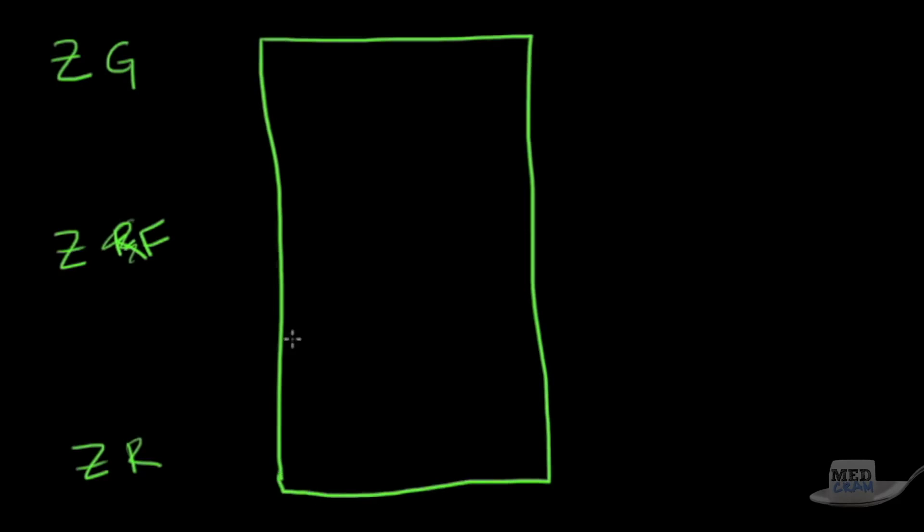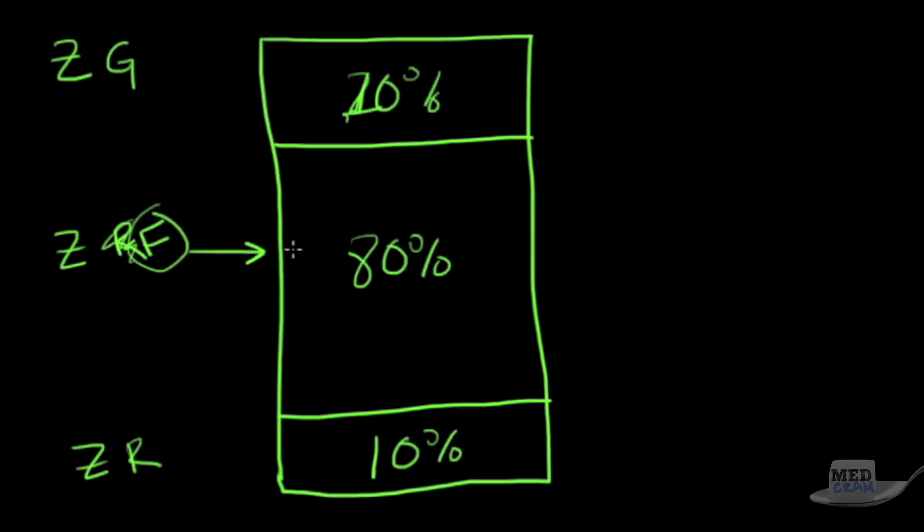If you remember our three layers - zona glomerulosa, zona reticularis, zona fasciculata, and zona reticularis. If you're actually to look at this linearly, if you take a slice of the adrenal cortex, you would see that the bulk of the adrenal cortex is actually made up of the zona fasciculata, about 10% up here and the other 10% down here.